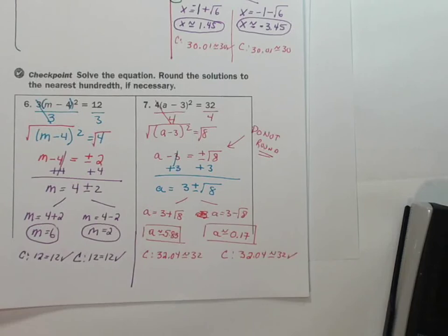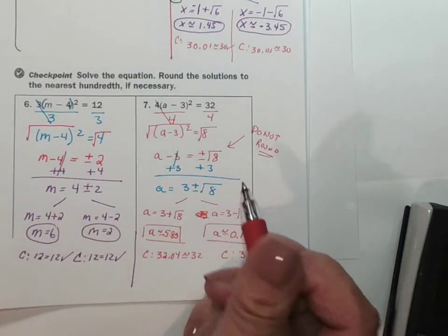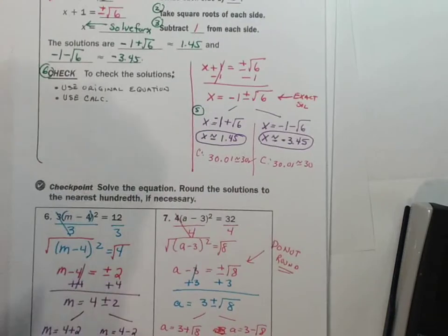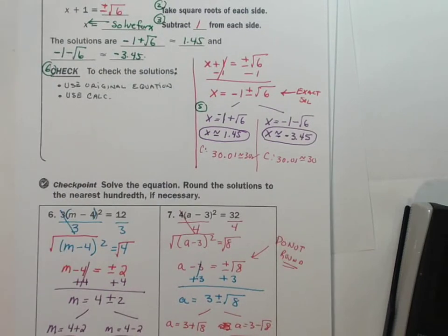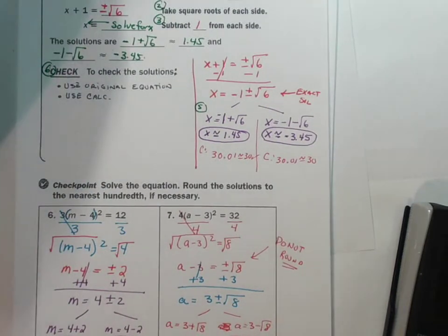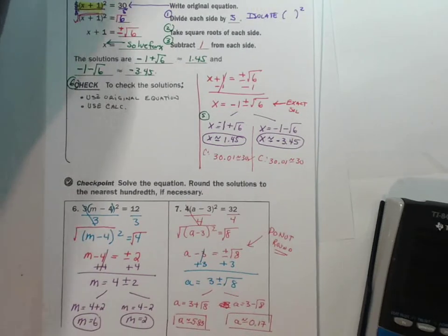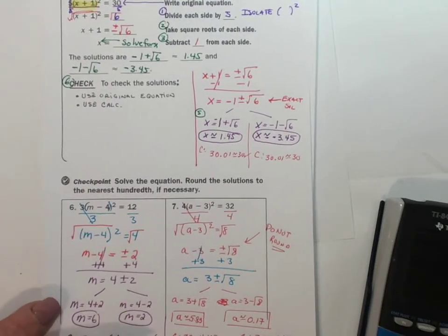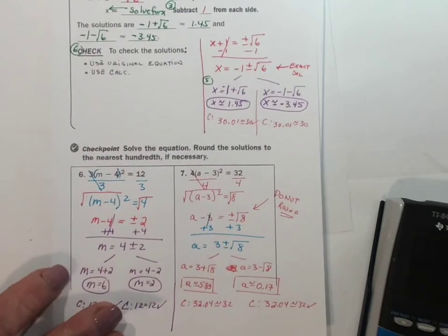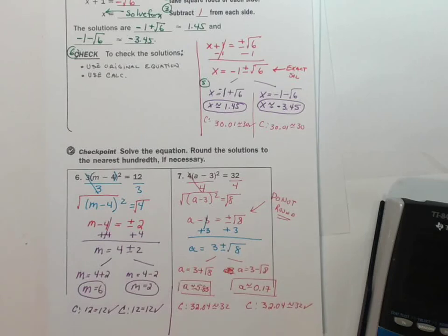So now you know how to solve binomial squares by taking the square roots. I think there are some practice problems attached to this for you to do. And as always, if you have any questions, come ask me. Have a great day.